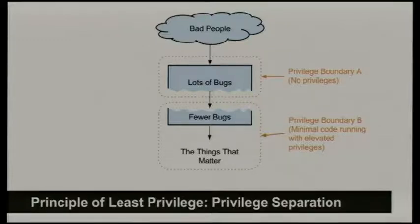To break in, your bad actor needs to first subvert your main service — make your main service do something it wasn't going to do normally, like a buffer overrun, or simply reading a file it wasn't meant to read. Then they have to turn that into an exploit against the privileged portion of code, the privileged boundary. So they need basically two exploits in order to get to the stuff that matters. Hopefully that's a lot harder than just getting the one exploit.